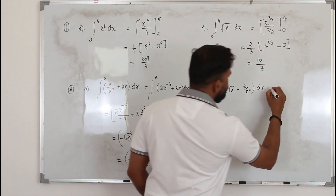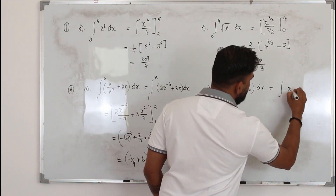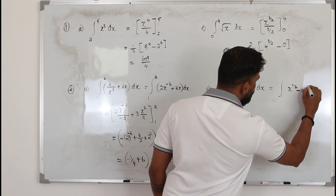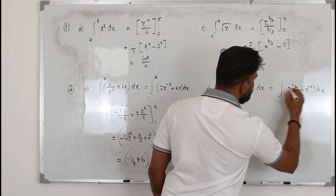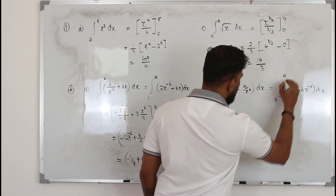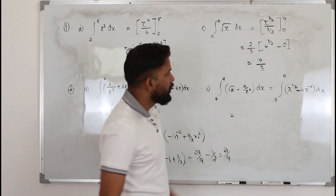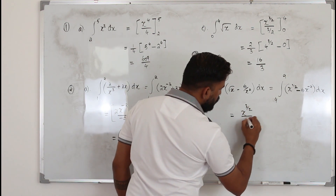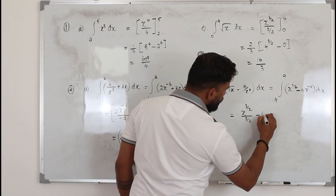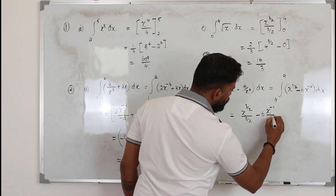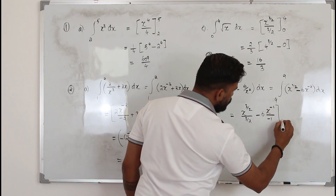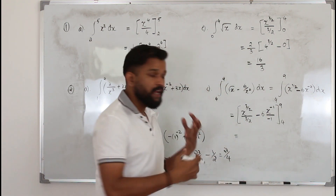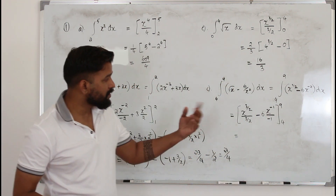Now question 2c. You can write the function as the integral of x power half minus 6x power negative 2 dx. The limit is 4 to 9. Integrate x power half: you will get x power half plus 1 over half plus 1, minus 6x power half, with the limit 4 to 9.